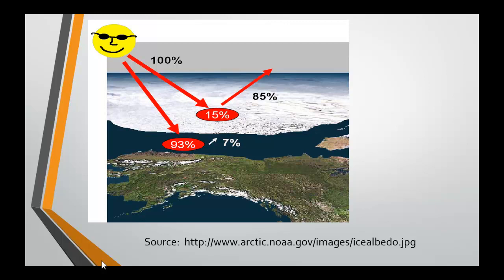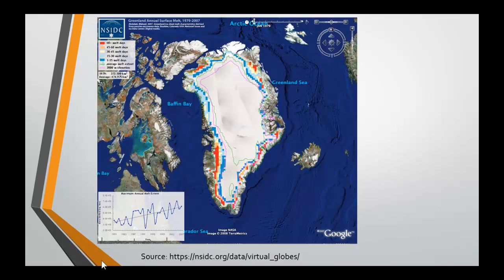Suppose we increase the average albedo of the Earth by just a very small amount, say 0.02. This would be enough to produce a global increase in temperature of around 4 degrees Celsius. The data we collect about very large masses of ice, such as the ice sheet on Greenland, shows us that the sheet is actually increasing its rate of melting, even if only very slowly.